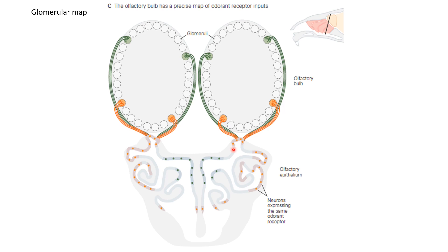All neurons that express the same kind of receptor project to the same regions of the brain — well-defined zones in the olfactory bulb, as we also saw in the case of insects. These zones are the glomeruli. One small difference is that in most insects there is one glomerulus for each type of neuron, whereas in vertebrates there are two glomeruli within the same olfactory bulb. Given the combinatorial code, each odor activates a certain subset of receptors and therefore results in activation of a certain subset of glomeruli — sometimes called the glomerular map of odors.